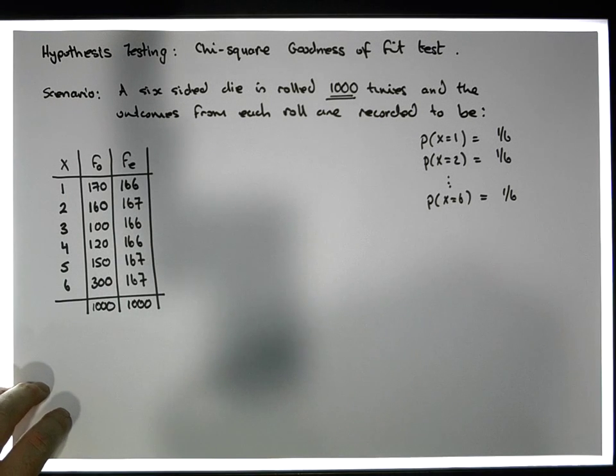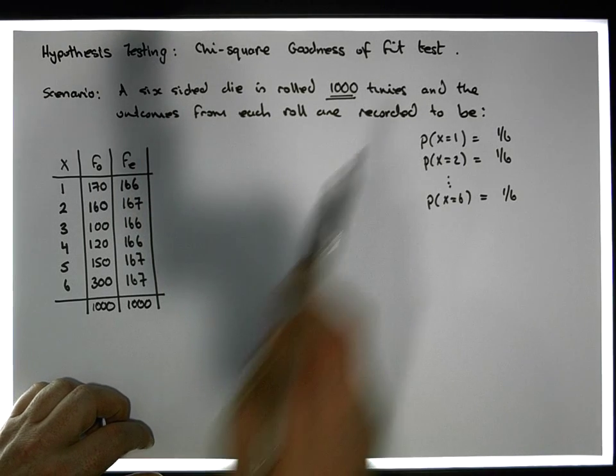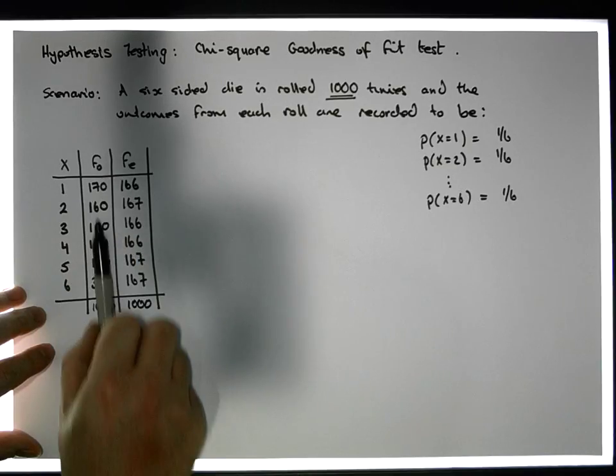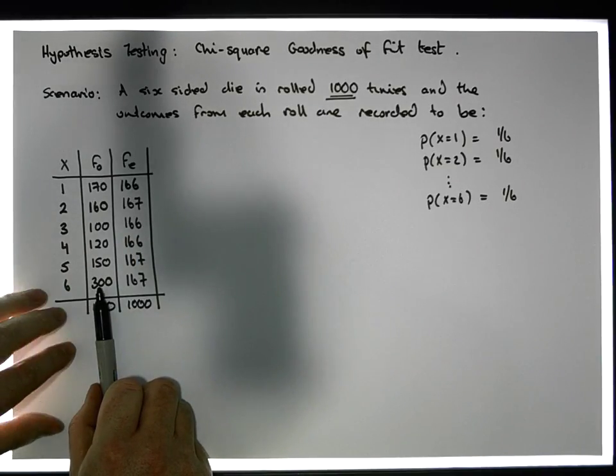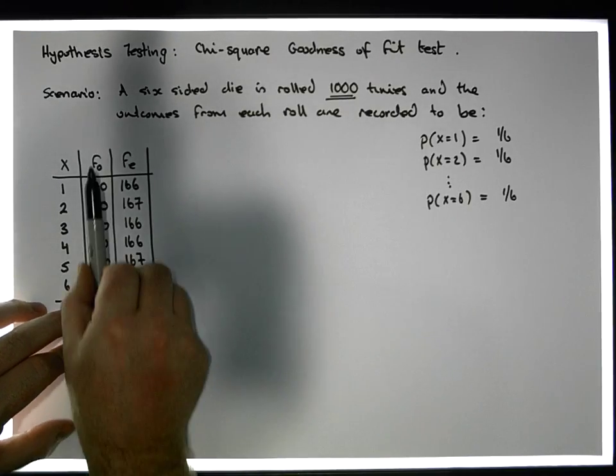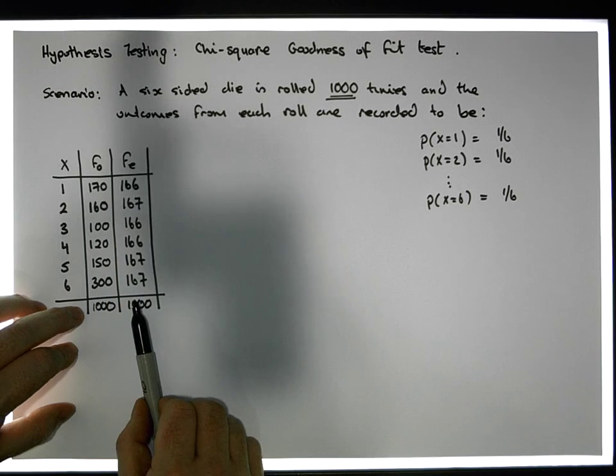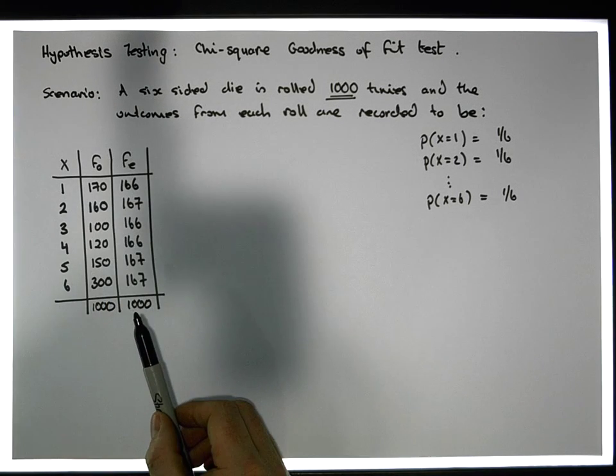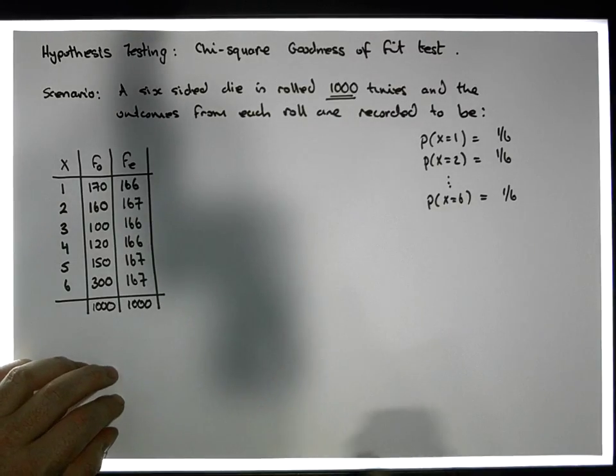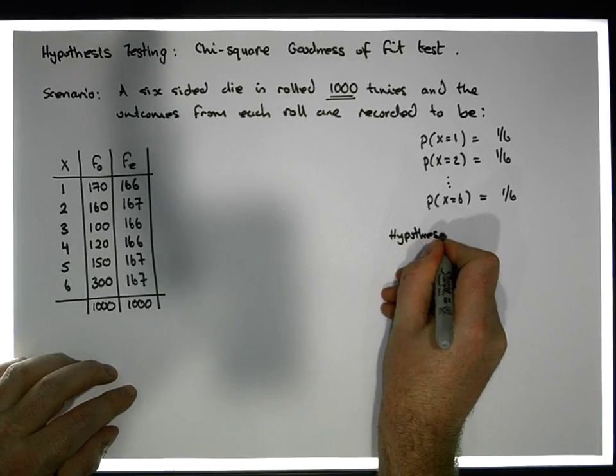What a chi-square goodness of fit test is going to calculate is whether the observed frequencies - the things we've observed - whether there's evidence to suggest they've been taken from a well-defined distribution. In other words, does this observed distribution fit the expected distribution? To do this particular test is straightforward enough - it's a five-step process. Here's the hypothesis test.